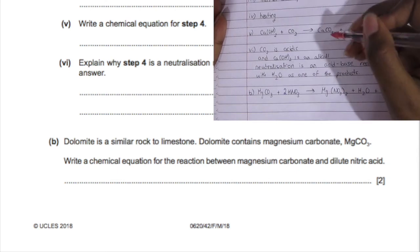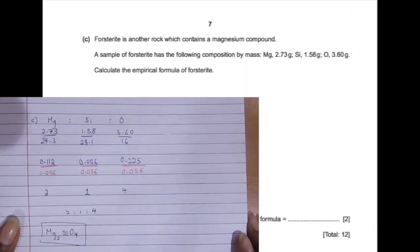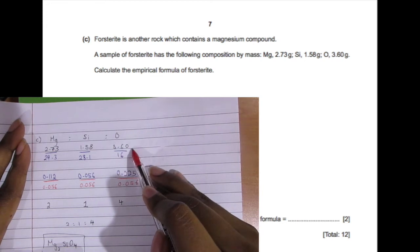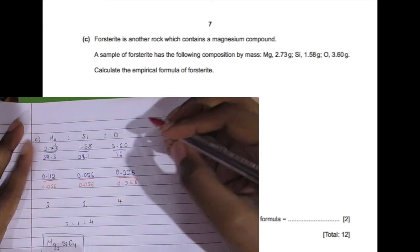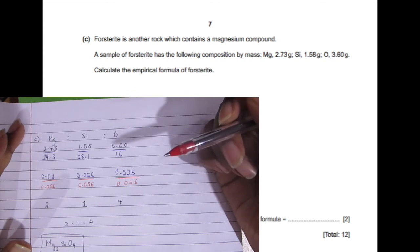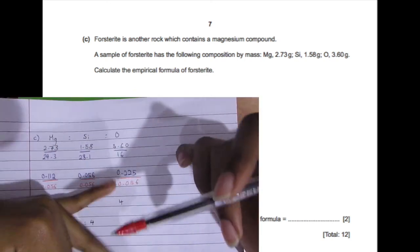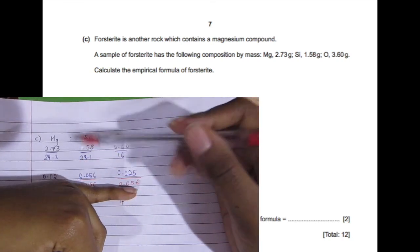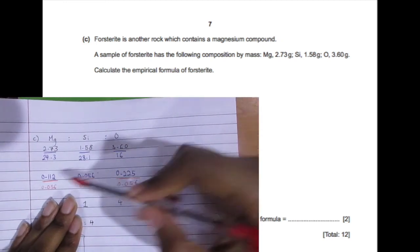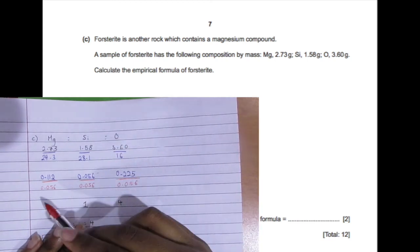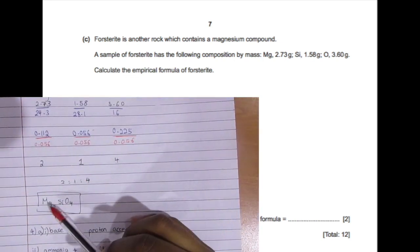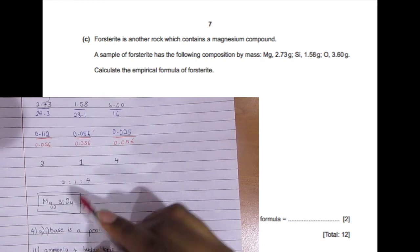For part C, which involves finding the empirical formula of this magnesium compound, they told us the mass of magnesium was 2.73, silicon was 1.58, and oxygen was 3.60. Write it out like this, then divide each one by its molecular mass. 2.73 divided by 24, 1.58 divided by 28, and so on. You get these numbers, then divide by the smallest value, which is 0.056. You'll end up with 2, 1, and 4. That is your ratio, 2 to 1 to 4. So it's magnesium 2, silicon 1, which you don't have to write out, and oxygen 4. That's the empirical formula.